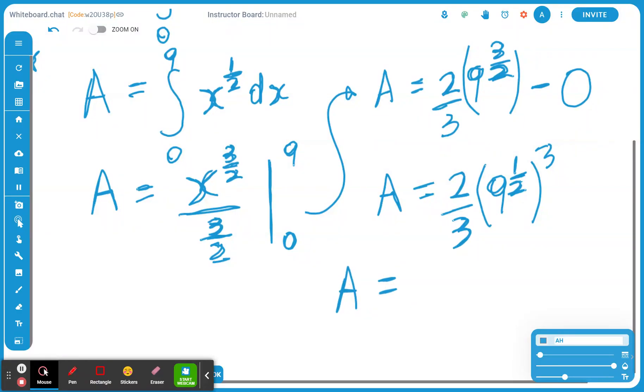If you think about 9 to the power of half, that's going to be the square root of 9. That's going to be 3. 3 to the power of 3 is going to be 27 divided by 3. That's going to be 9. 9 times 2 is going to be exactly 18.